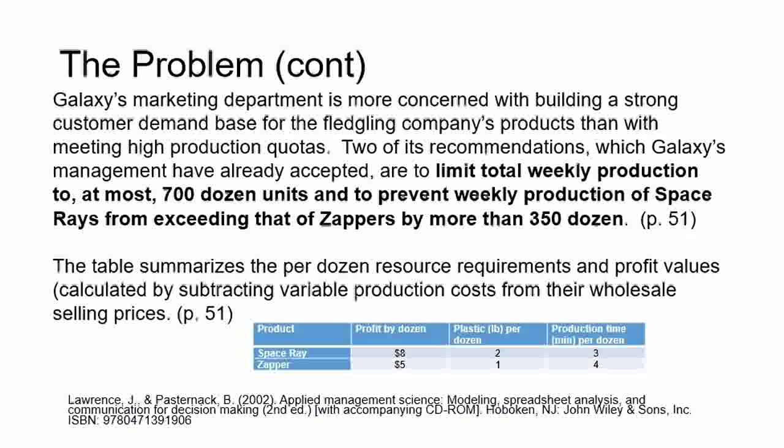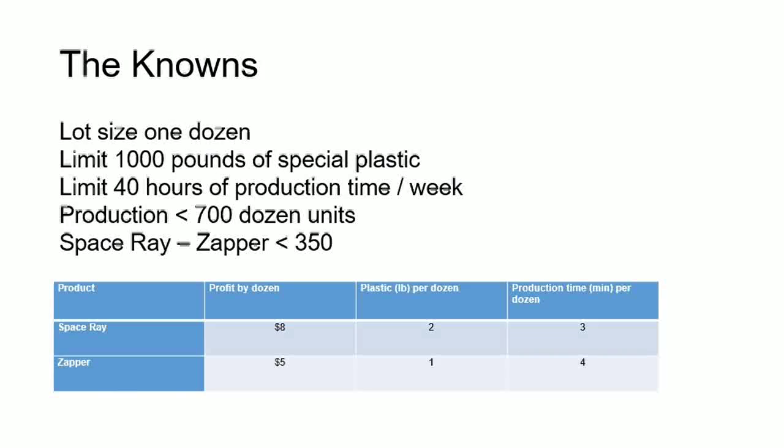Adding to our knowns, we add lot size one dozen, limit 1,000 pounds, limit 40 hours. Then we add the production is less than or equal to 700 dozen units, and the Space Ray minus Zapper difference is less than 350 dozen units. And then from the table, we have the information on profit, plastic used per dozen, and the production time.